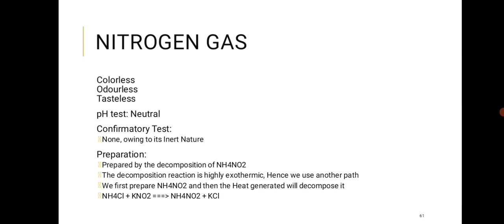Nitrogen gas (N2) is an inert gas — colorless, odorless, and tasteless; neutral. There is no confirmatory test because N2 does not react with anything. It is prepared by the decomposition of ammonium nitrite (NH4NO2). This decomposition is highly exothermic, so you do not apply heat to NH4NO2 directly — instead, the heat generated during production causes it to decompose.